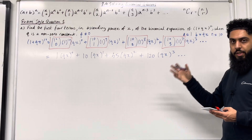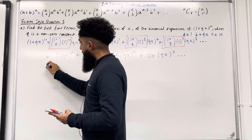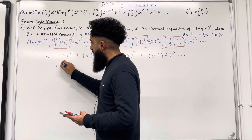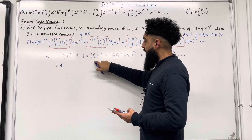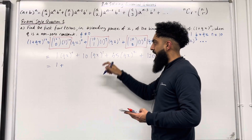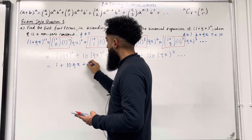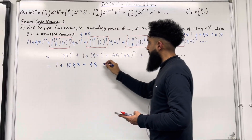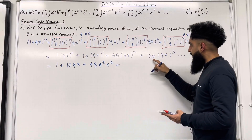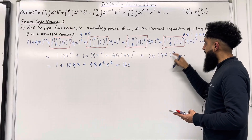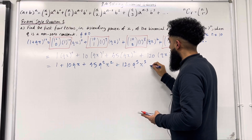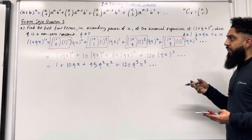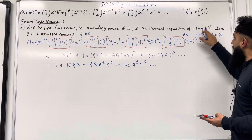Now I'm going to simplify each term. (qx)^0 is just 1, so the first term is 1. Plus 10 lots of qx, which is just 10qx. Plus 45q²x². Plus 120q³x³, dot dot dot. And that there is the first four terms in ascending powers of x of the binomial expansion of (1 + qx) to the power 10.